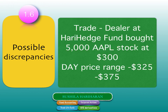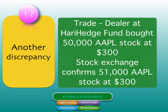A possible discrepancy: the dealer has bought 5,000 AAPL (Apple stock) at $300, but the price range for the day was only $325 to $375. This might favor the hedge fund since they bought below the day's price range — but how did it get executed? Was there price manipulation, front-running, or an off-market trade? Another discrepancy: a trade capture shows 50,000 AAPL stock, but the stock exchange sends confirmation for 51,000. All these discrepancies are caught by the middle office trade validation team, who then escalate them for confirmation.